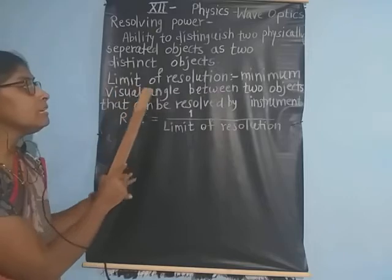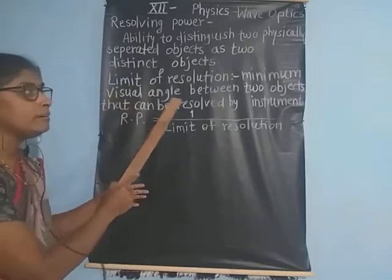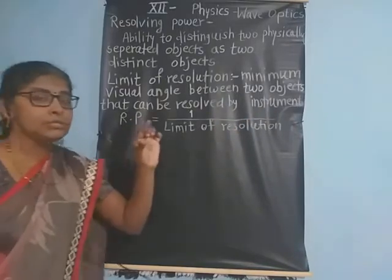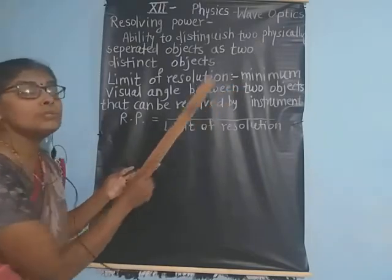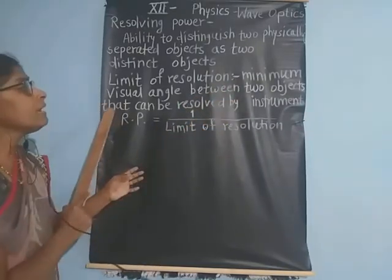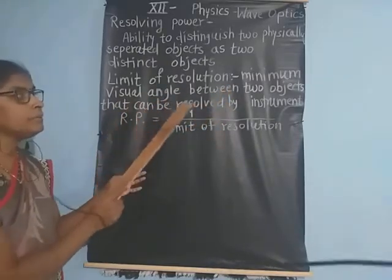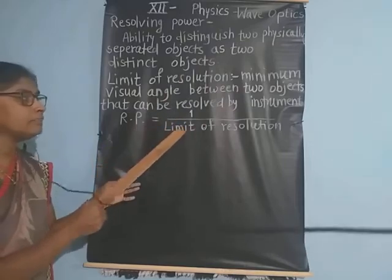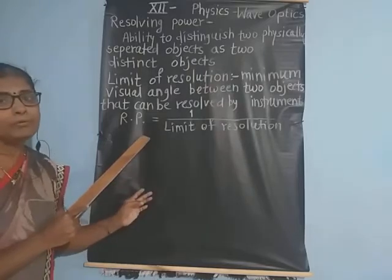We have to explain the limit of resolution. What is the limit of resolution? The minimum visual angle between two objects that can be resolved by the optical instrument. If we take the reciprocal of the limit of resolution, then we get the resolving power of that instrument.